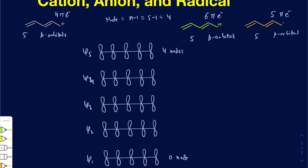When you have 0 nodes, that means all these orbitals are going to be in constructive interference — all overlapping with one another in phase. So I'm going to shade these out, making all these orbitals in phase. They are all arranged the same way, everyone overlapping, giving no node. That's 0 nodes.